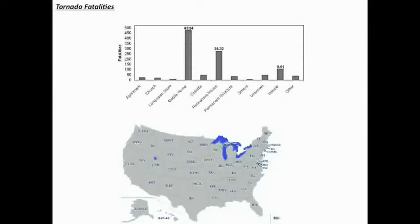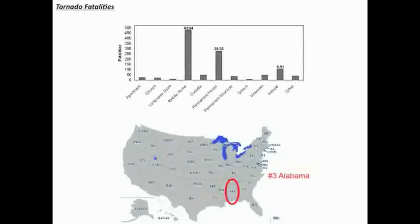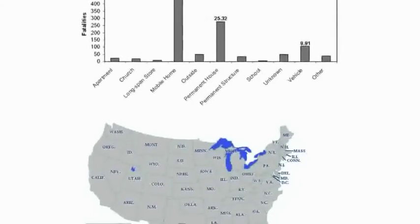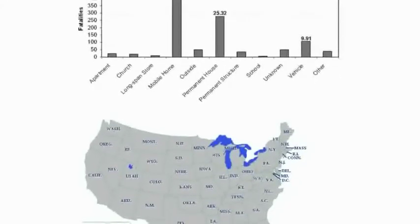When looking at total deaths per state, Texas ranks number one — because Texas, in the middle of Tornado Alley, is a huge state with a large population and a large number of tornadoes. However, if you normalize these statistics by the size of the state, the state with the most fatalities per area is Mississippi, followed by Arkansas, then Alabama, then Illinois, and finally Indiana. Notably, the top state is not in traditional Tornado Alley.